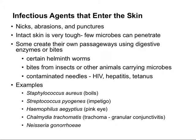We'll begin by looking at how microbes enter through the skin. There really needs to be some form of nick, abrasion, or puncture that could be formed by a bite, a cut, or a needle. Intact skin on its own is very tough, so few microbes can actually penetrate the skin, and it also has an acid mantle to protect us. Some organisms, however, are able to create their own passageways using digestive enzymes or bites. For example, certain helminth worms produce enzymes that break down the skin and allow them to pass in. Insects can bite and introduce microbes, as can other animals.